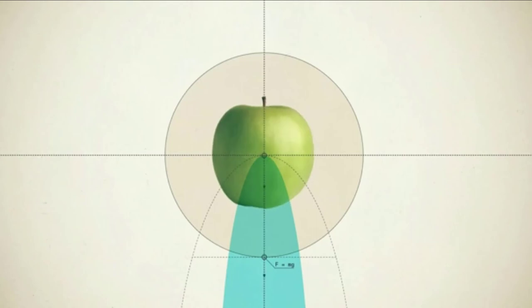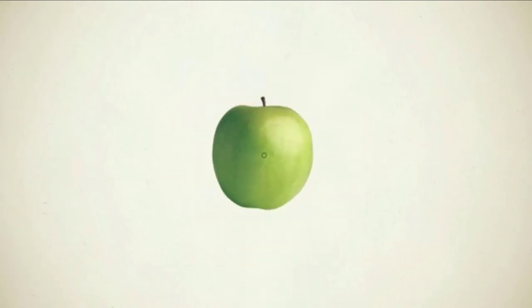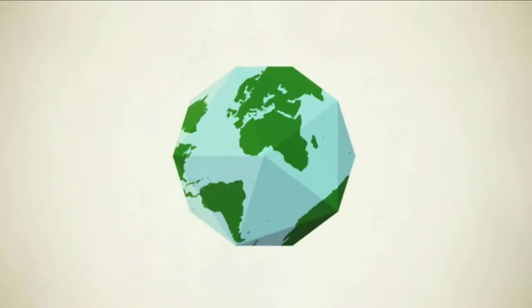Newton said that apples which drop off a tree were pulled by the same force that kept the moon going around the earth. He called this gravity.